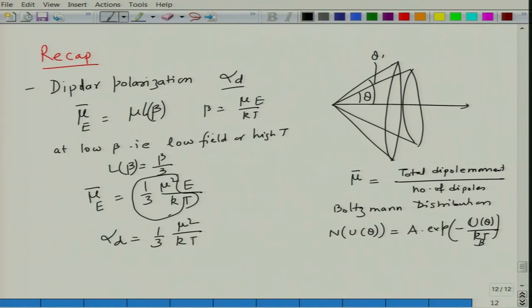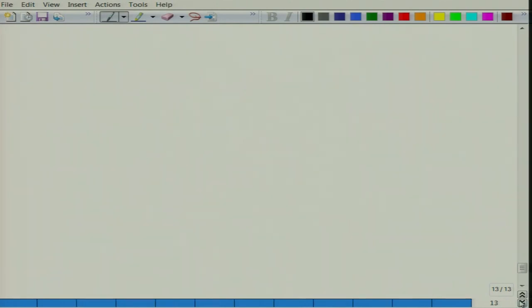From this we determined that dipolar polarizability alpha_d = (1/3) * mu² / kT. This means dipolar polarizability decreases as you increase the temperature, and it is dependent on temperature unlike the other two polarizabilities — electronic and ionic.